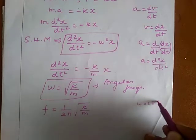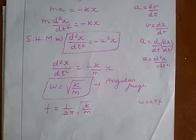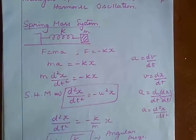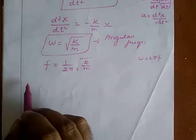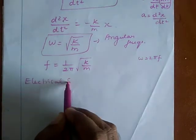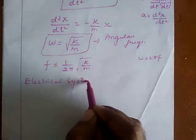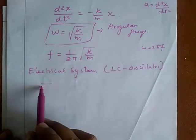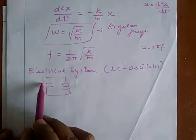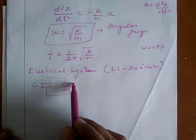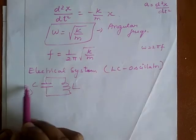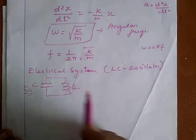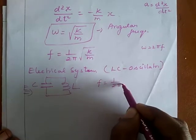We know ω = 2πf, so after solving, that gives us the frequency. Next, moving from this mechanical spring-mass system to the electrical system — the LC oscillator. This oscillator consists of a capacitor of capacitance C and an inductor of inductance L. If I apply energy E to the tank circuit, the energy will oscillate back and forth with a definite frequency: f = (1/2π)√(LC).